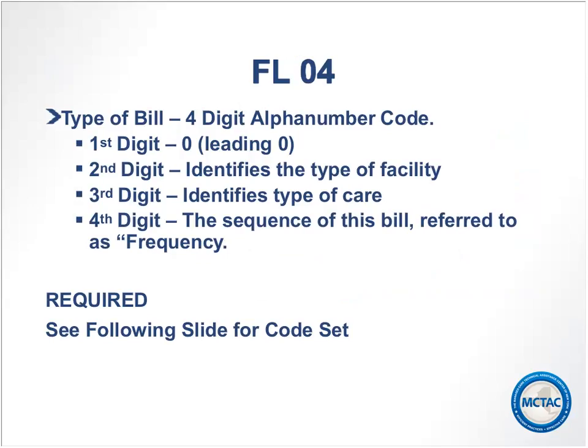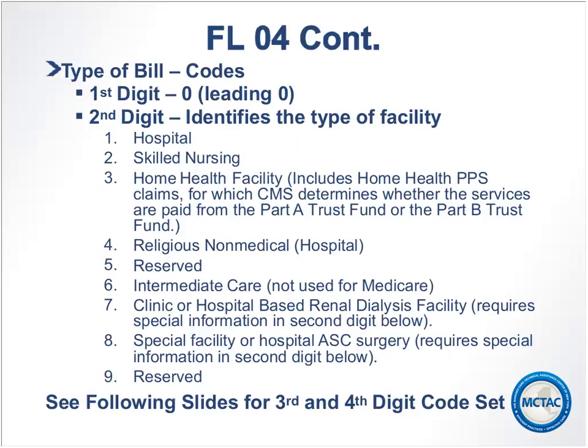Now we're going to start with the actual field-by-field review, skipping fields with no change. Field 4 — we do want to spend time on the type of bill. MCTAC and the state have received quite a few questions on it, so we have an updated additional slide to go into more detail. This field is a four-digit alphanumeric code. The first digit is always zero — a leading zero — and is required. The second digit identifies the type of facility, the third identifies the type of care, and the fourth identifies the sequence of this bill.